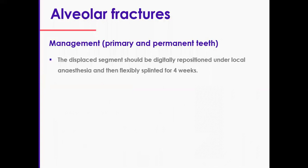Management in both dentitions involves repositioning the segment under local anesthetic and splinting using a flexible splint for four weeks. Identify the teeth outside the fractured segment — the parts that don't move — and use the splinting technique we discussed in root fractures to provide the flexible splint. Visit the Dental Trauma UK site, the members area, to watch the video on this splint.